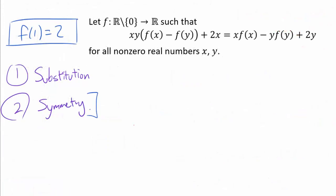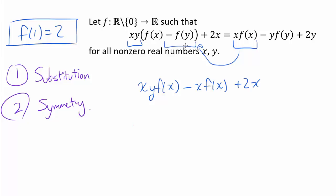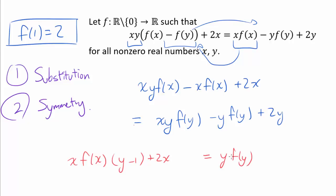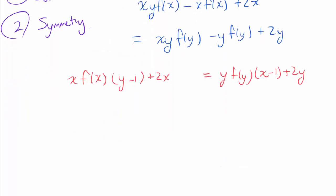Now for the second approach using symmetry. We rearrange the functional equation to make it look even more symmetric: move x·f(x) to the left and xy·f(y) to the right, so terms with x·f(x) and y·f(y) are adjacent. Factoring yields a factor of (y − 1) and (x − 1).